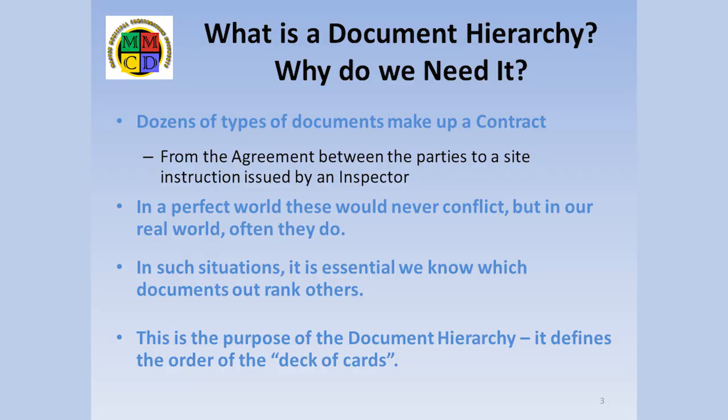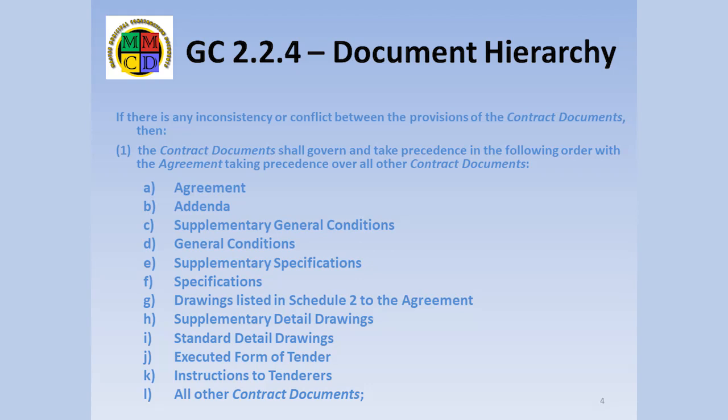The document hierarchy defines which documents are outranked by any given class of document. In the MMCD Platinum Edition, the document hierarchy can be found in General Condition 2.2.4. Section 1 of the clause sets the ranking with the agreement as the highest ranking document. Following that are the Addenda, the General Conditions, the Specifications, the Drawings, the Executed Tender, the Instructions to Tender, and everything else.